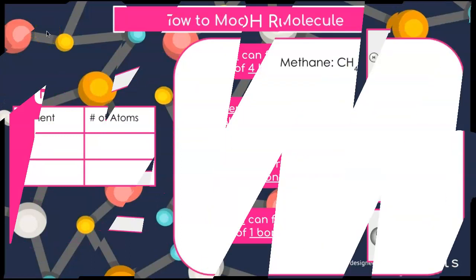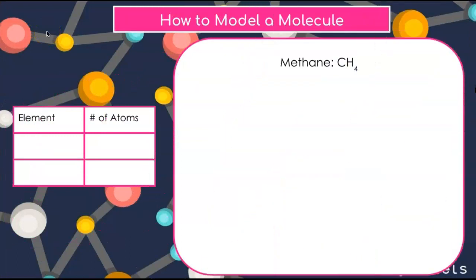So now we should be just about ready to look at an example of creating a molecular model. Let's start with this example, methane, which has a chemical formula of CH4. So in order to create this model, the first thing I want to do is determine the type and number of atoms that are present.